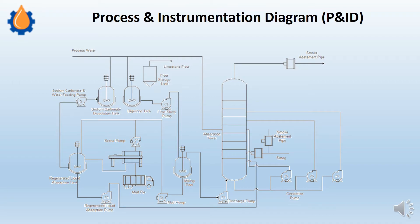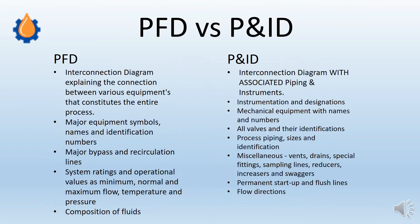Here we can see how a P&ID is formed. There is one absorption tower and all equipments connected to it are connected by means of pipes. From this diagram we can get the size of pipes, the material of pipes, their rating, and much more information — all of which can be extracted from the P&ID.